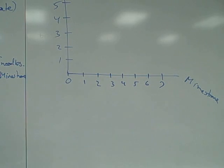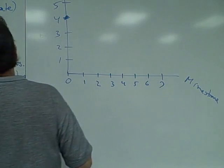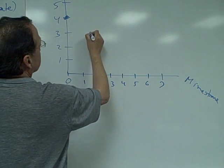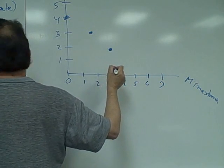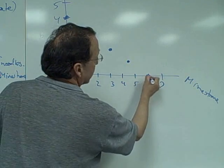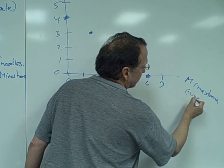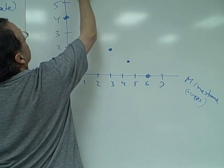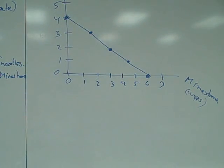Noodle or minestrone. Four cups of noodles and zero minestrone is that point. Three cups of noodles and one and a half cups minestrone is this point. Two cups of noodles and three cups of minestrone. One cup of noodle and four and a half cups of minestrone. Zero cups of noodles, all minestrone would be six cups of minestrone and no noodles. Minestrone measured in cups, noodles measured in cups. We connect the points with a smooth line, which in this case will be a straight line, and that's what we get. This graph, this picture worth a thousand words, shows you how much we can produce.